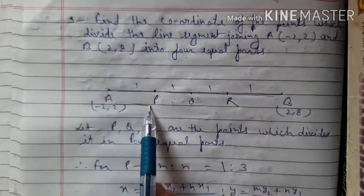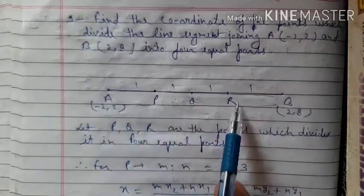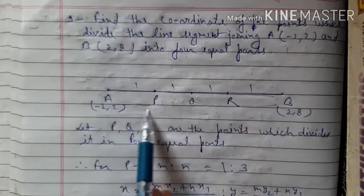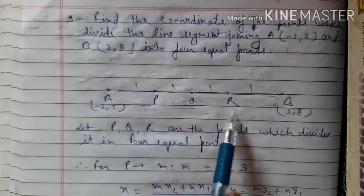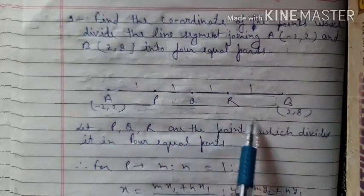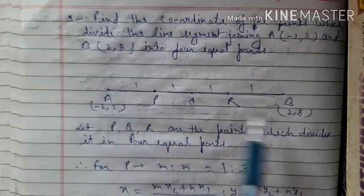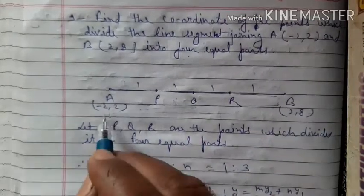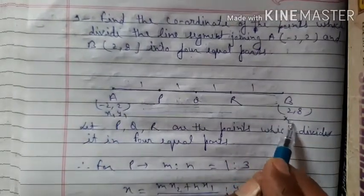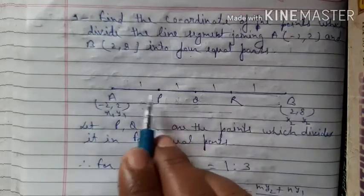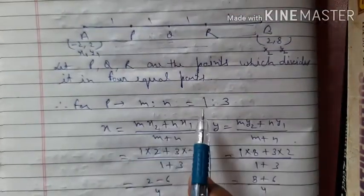For P, the ratio from A to B is 1:3, so M:N = 1:3. For Q, it is 2:2. For R, it is 3:1. We take x1, y1 as A(-2, 2) and x2, y2 as B(2, 8), then apply the section formula for each point.